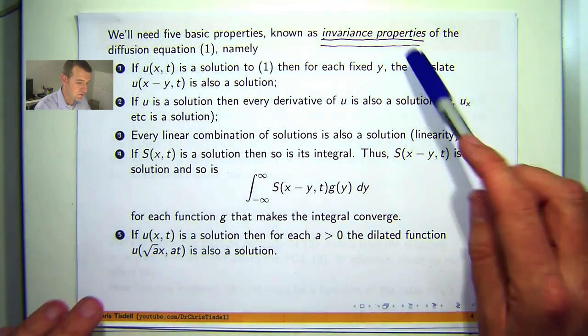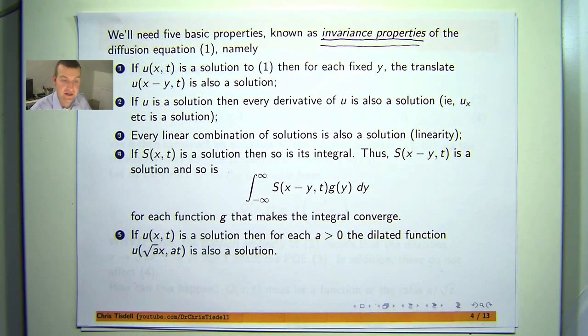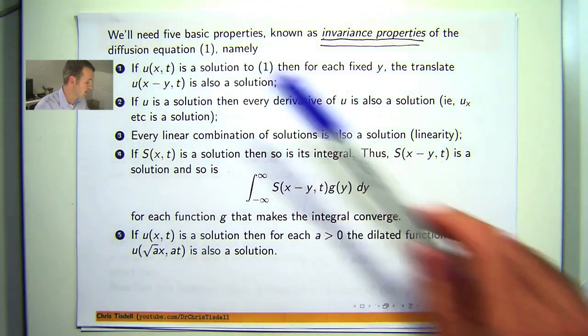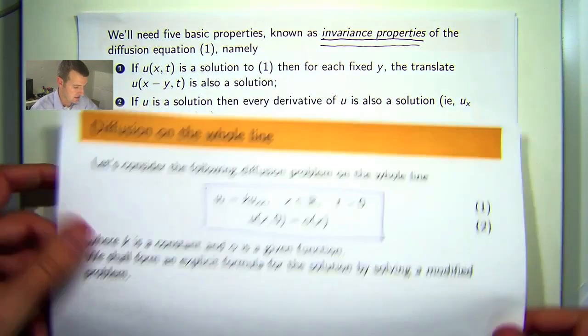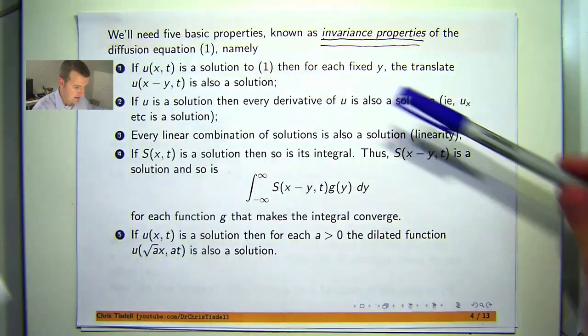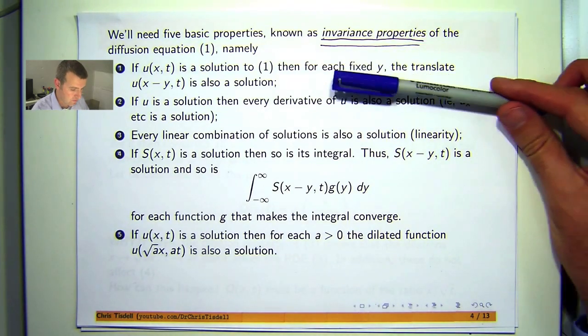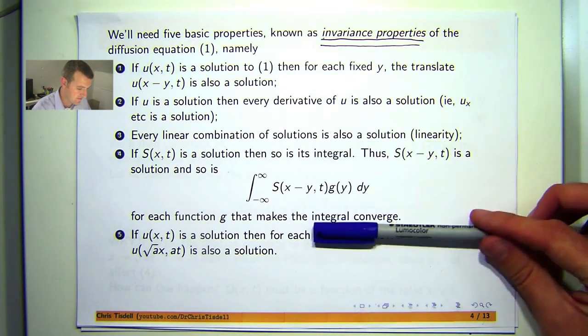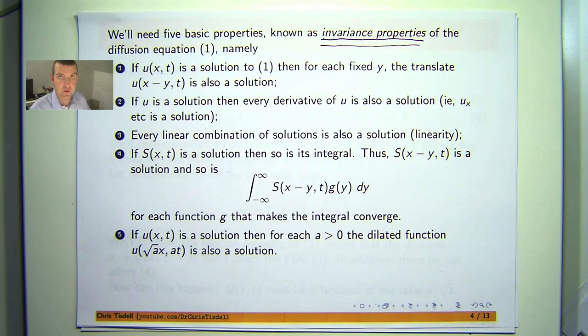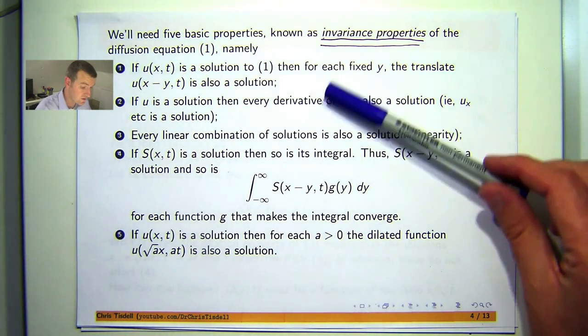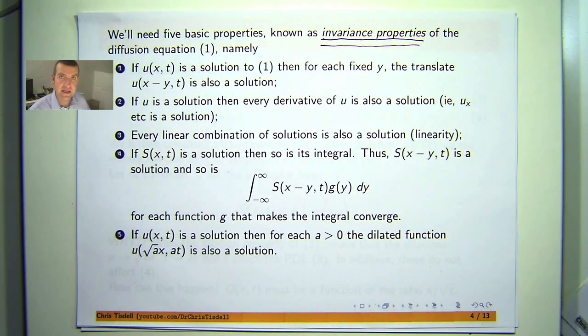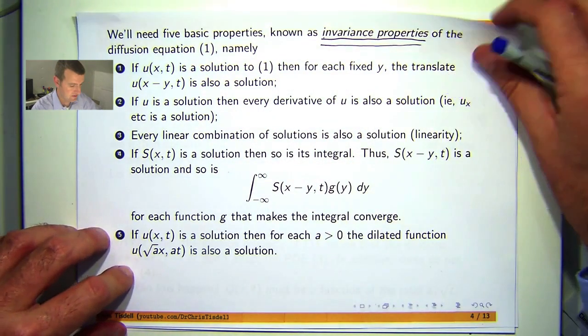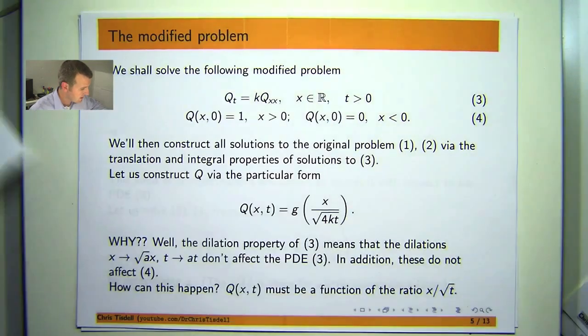So we're going to form an explicit formula for the solution by solving a related problem. Now in previous videos we looked at five important invariance properties of the diffusion equation or the heat equation. And I spent quite a bit of time proving each one of these five properties. Now we're going to use those or apply those properties in the proof of today's video.